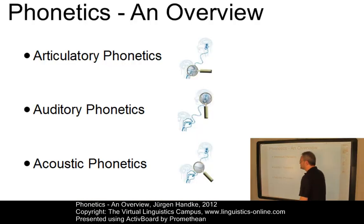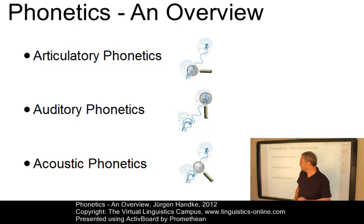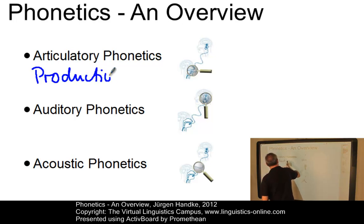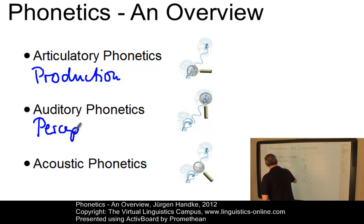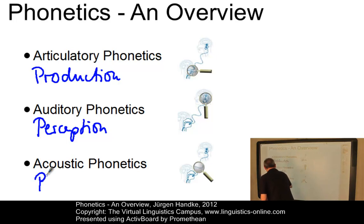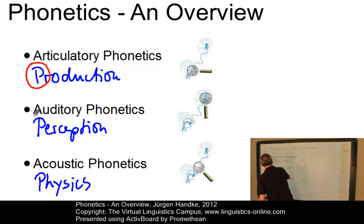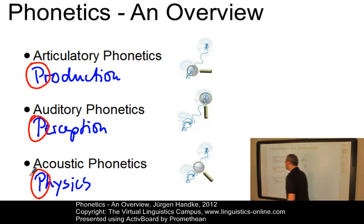The names of these branches all use an initial letter A. Alternatively, you could use a P and associate these branches with speech production, auditory phonetics with the perception of speech, and acoustic phonetics with the physics of speech. So here you have your initial characters P — a good way to remember these disciplines.